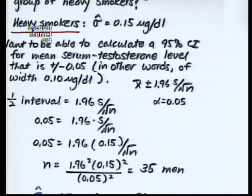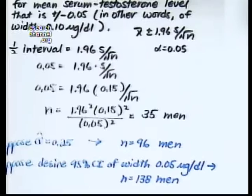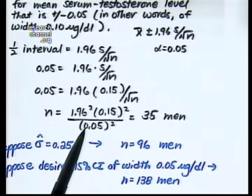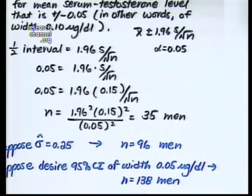If the estimated standard deviation were 0.25 instead of 0.15, the larger numerator would require 96 men. If instead we wanted a narrower confidence interval of width 0.05 micrograms per deciliter — that is, a half-width of 0.025 — the sample size would increase to 138 men. This sample size calculation is based solely on estimation, not hypothesis testing.